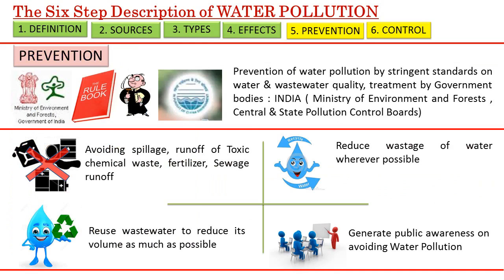How do we prevent water pollution? The general methods are to avoid intentional spillage of industrial wastewaters or agricultural runoff into natural water bodies without treatment. Also, recycling wastewater and generating public awareness on the effects of water pollution can control it to some extent. However, the most important preventive measure is enforcement of strict environmental laws against pollution by the Ministry of Environment and Forest, Government of India, and by the Central and State Pollution Control Boards, who set stringent water quality standards for releasing different types of wastewater.